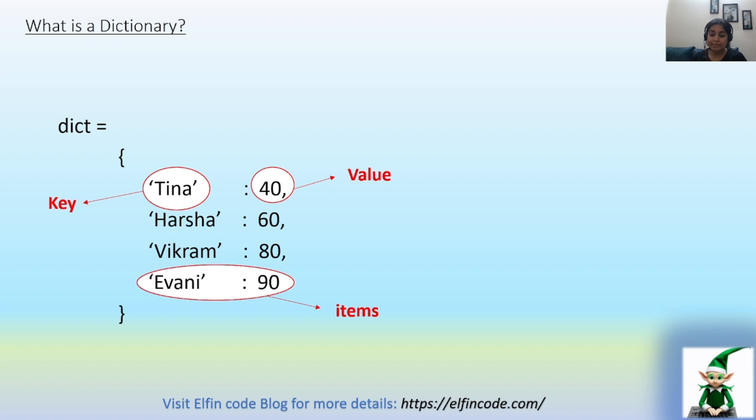Before moving on to the conversion part, let's first understand what is a dictionary and what is JSON. A dictionary is nothing but a collection of key-value pairs. Here we see an example dictionary with four key-value pairs. Key-value pairs are also called items.